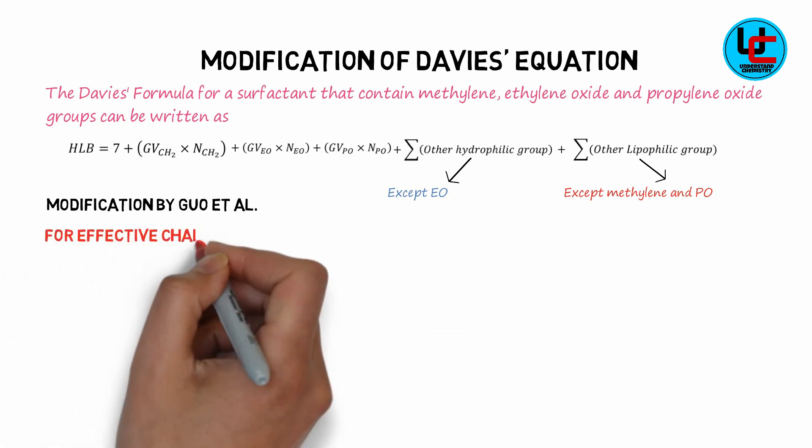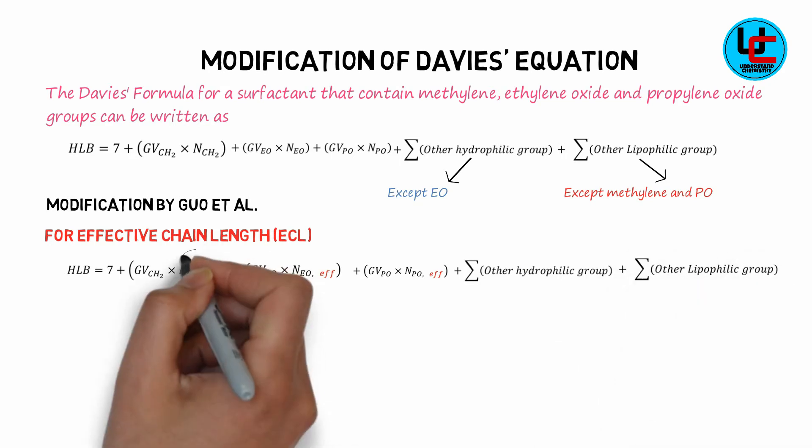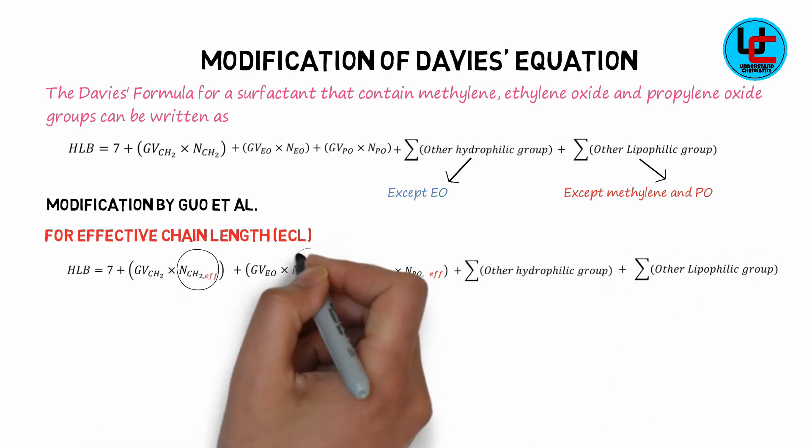Luo et al. had modified this equation and instead of using actual chain length, they have used effective chain length for methylene, propylene oxide, and ethylene oxide groups.